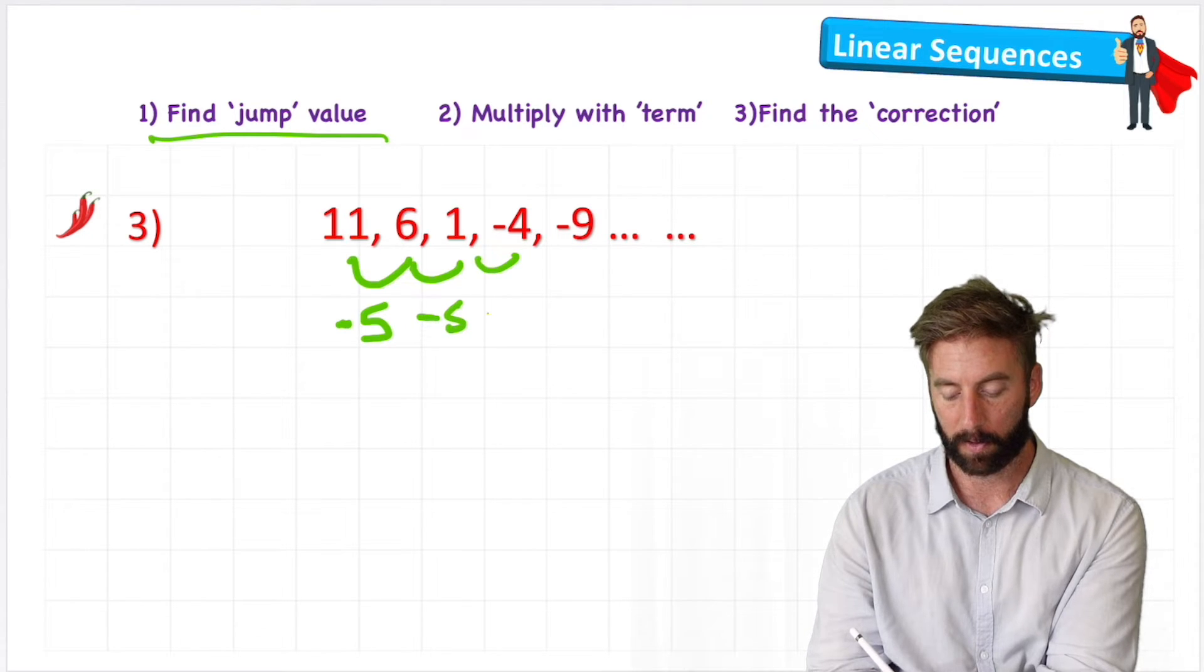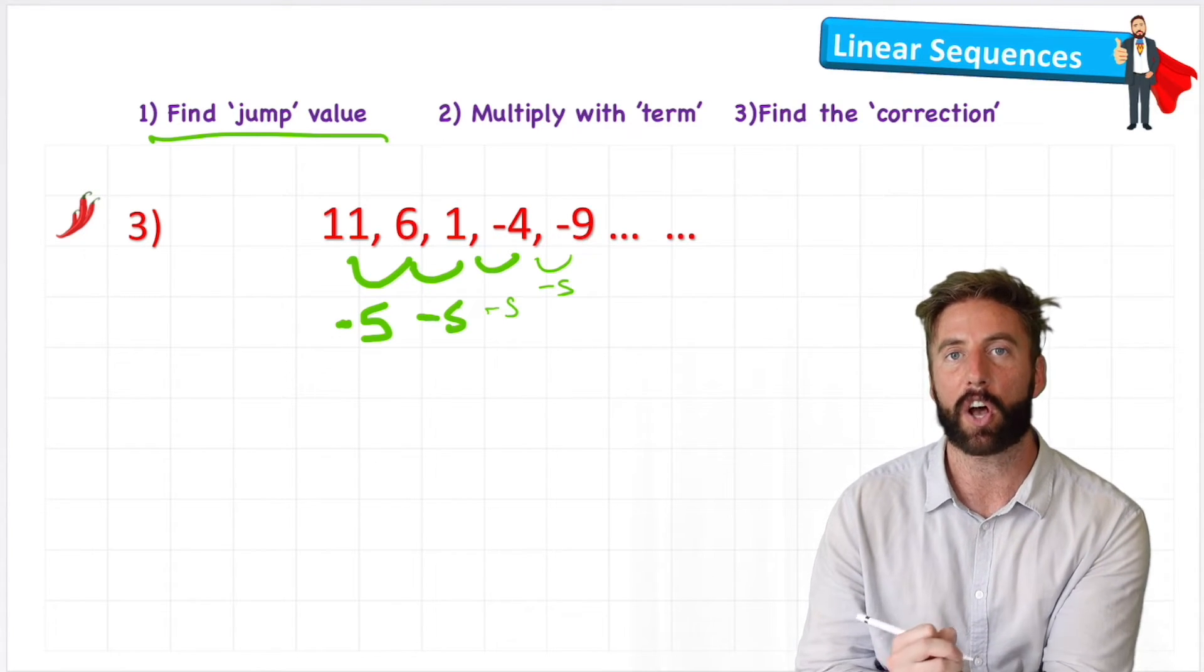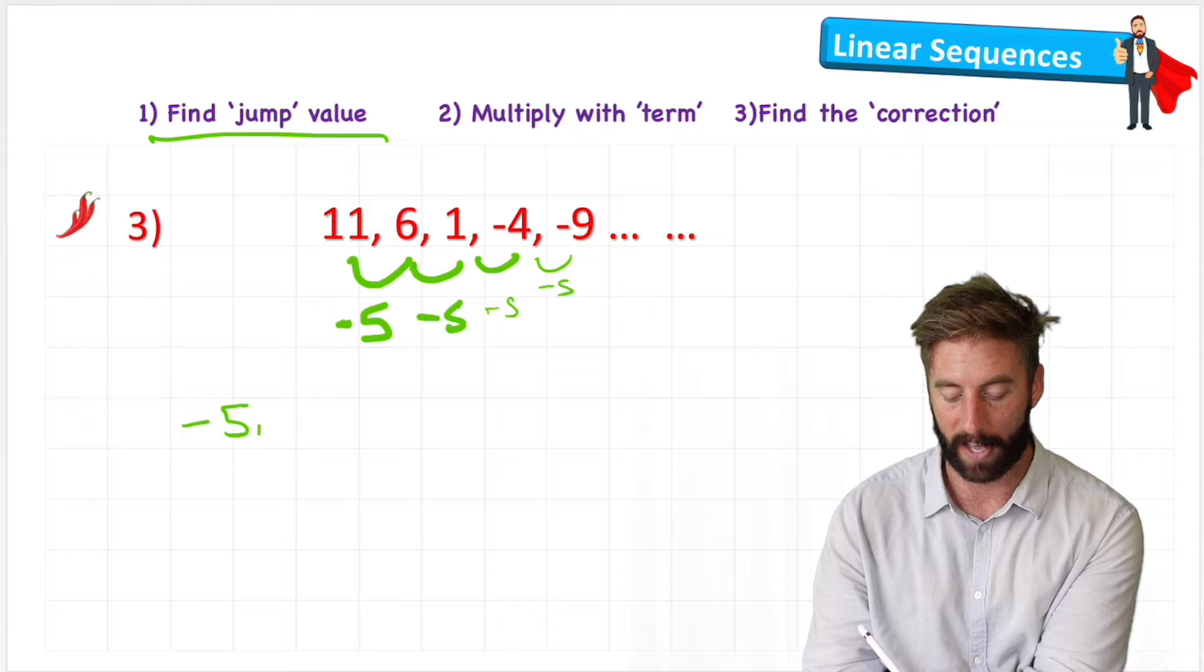Minus 4 and minus 9, also negative 5. So the start of my formula this time is going to be negative 5n.